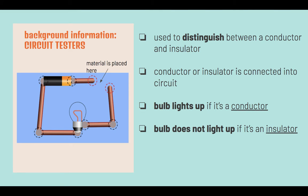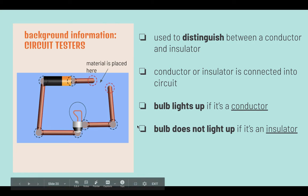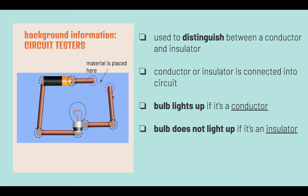Circuit testers are used to distinguish between a conductor and insulator. The conductor or insulator is connected into the circuit. The bulb will light up if it is a conductor, as it allows electric current to flow through it. However, the bulb does not light up if it is an insulator, as it does not allow electric current to flow through it.